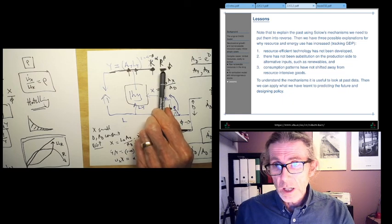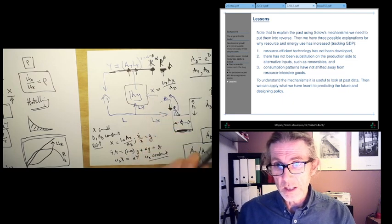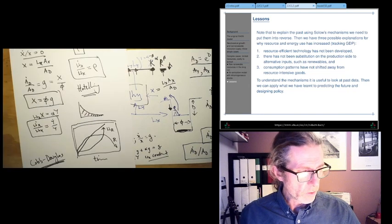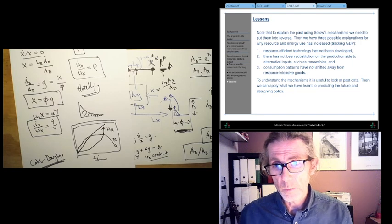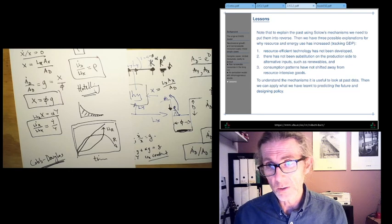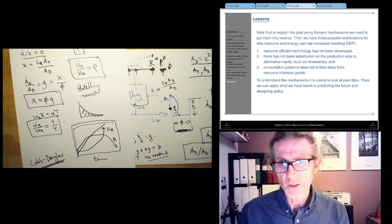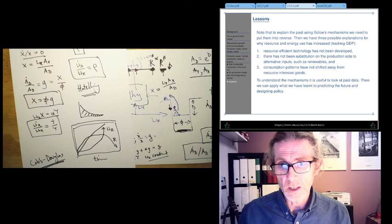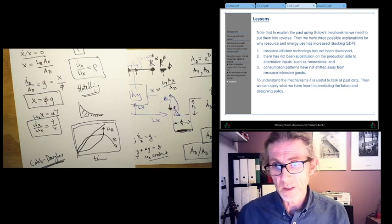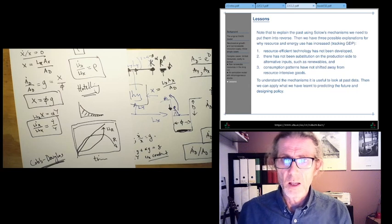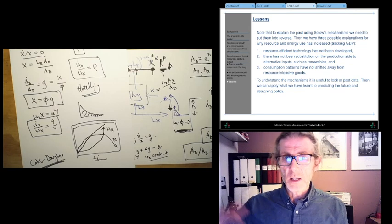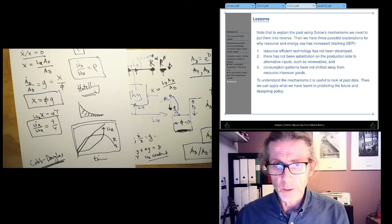Note that to explain the past we have to put those mechanisms into reverse. So why has resource use tracked GDP? It must be that resource efficient technology hasn't been developed, there hasn't been production on the product substitution on the production side away from certain inputs, and consumption patterns haven't shifted away from resource intensive goods. We can learn about how these mechanisms work looking at historical data and then help use that to help us predict the future.